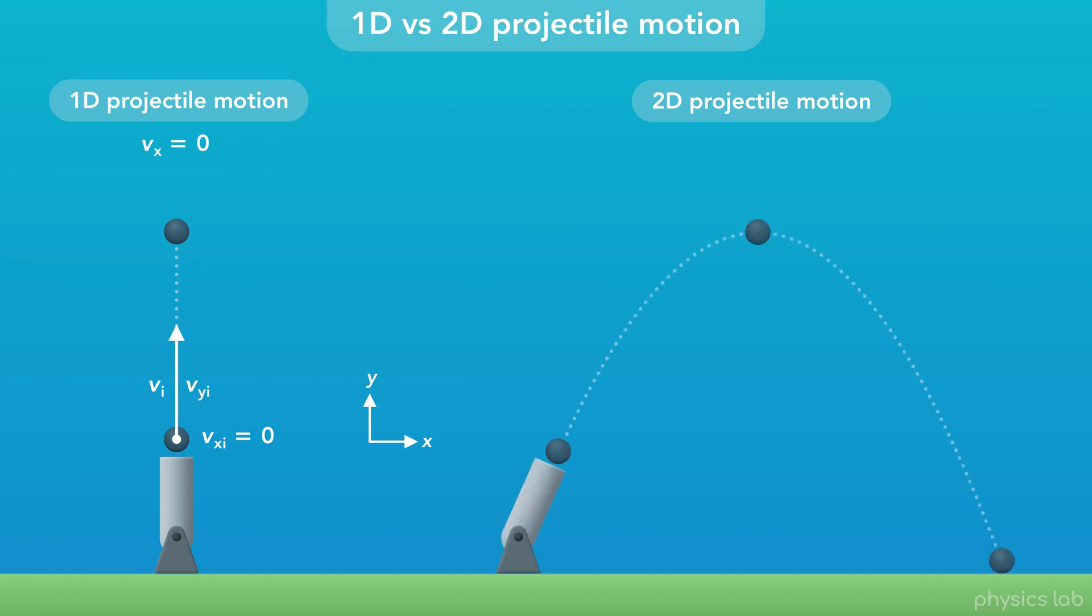But in 2D projectile motion, an object does move sideways, so it has some velocity in the x direction. The initial velocity is not vertical, it's usually at an angle. So now we have an initial y velocity and an initial x velocity.